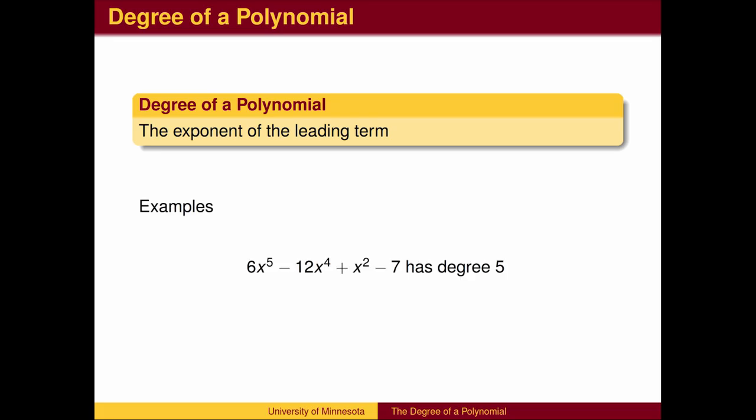For example, this polynomial has degree 5 since the largest exponent is 5. This expression has degree 2.